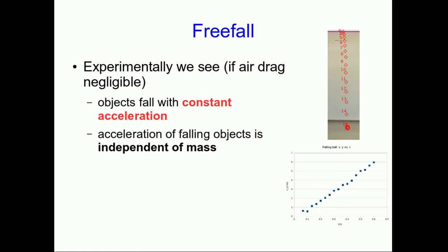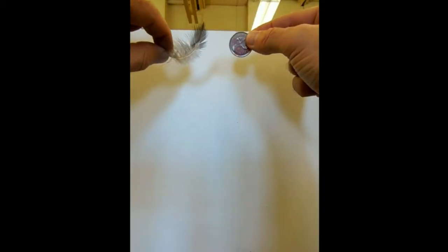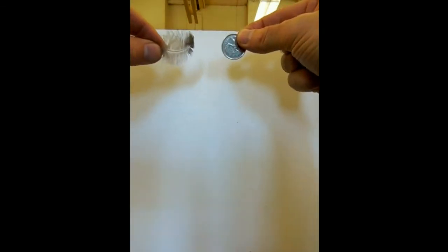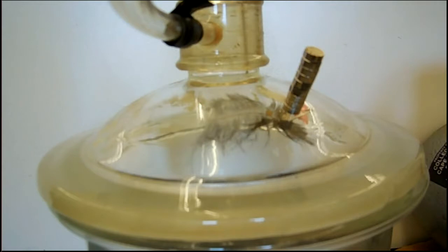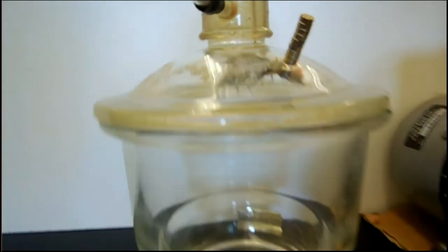Now I'm going to drop a coin and a feather, and clearly those didn't fall with the same acceleration. But now I've got the feather inside a sealed jar, and I've connected that jar by this hose to a vacuum pump.